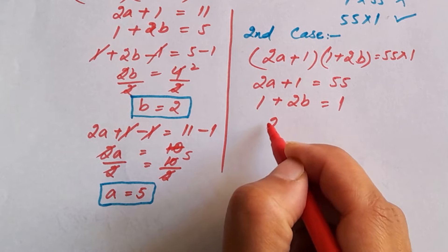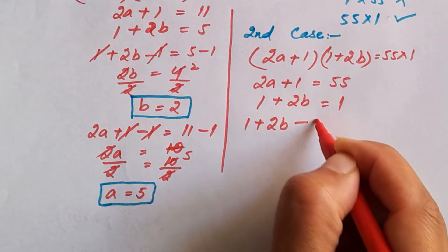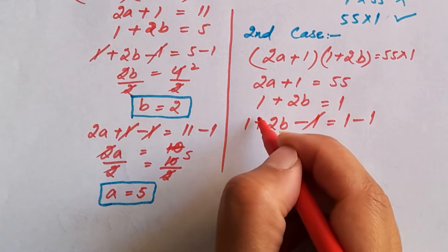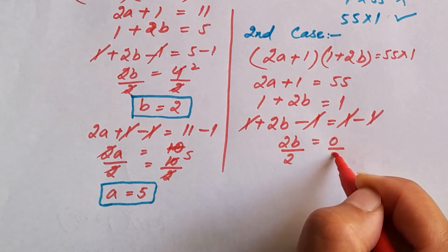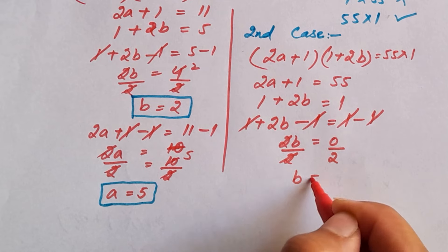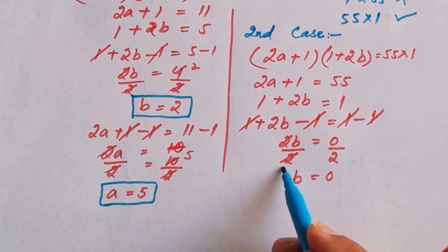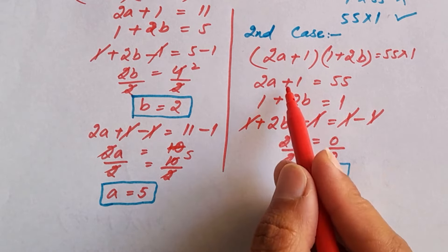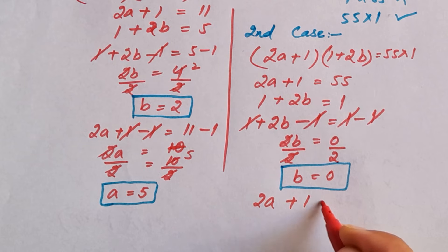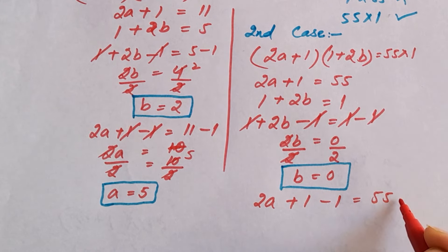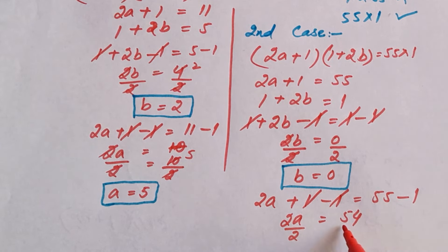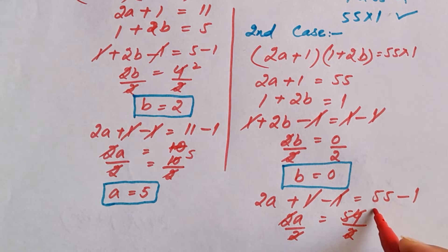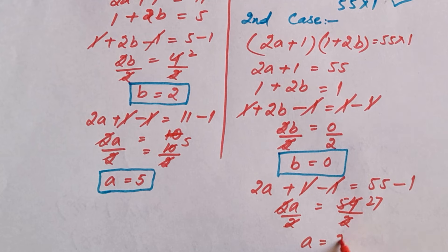Now solving Case 2. Subtracting 1 from both sides of equation 2: 2b equals 1 minus 1 equals 0, so dividing by 2 gives b equals 0. From equation 1, subtracting 1 from both sides: 2a equals 55 minus 1 equals 54, dividing by 2 gives a equals 27. So from Case 2: b equals 0 and a equals 27.